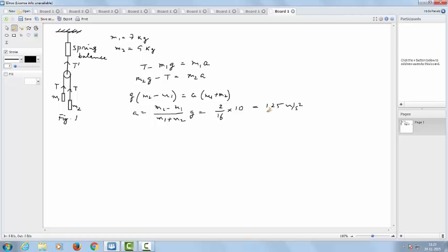Now, we can use this value of acceleration in any one of these equations, equation 1 or equation 2. So, let us use equation 1. T minus M1 into G is equal to M1 into 1.25. So, T would be equal to M1 into G plus 1.25.